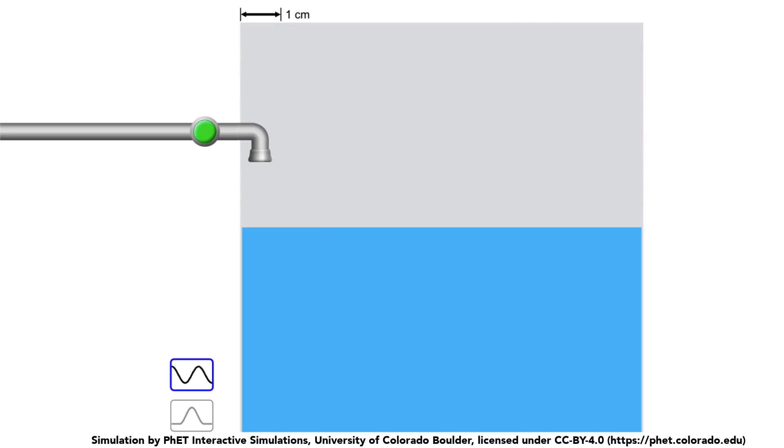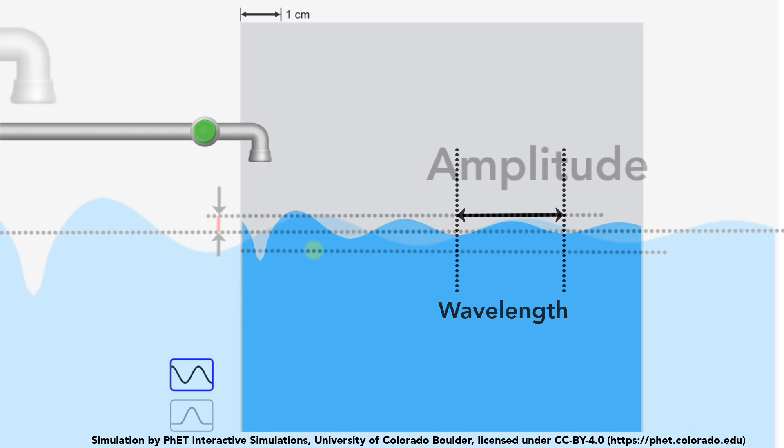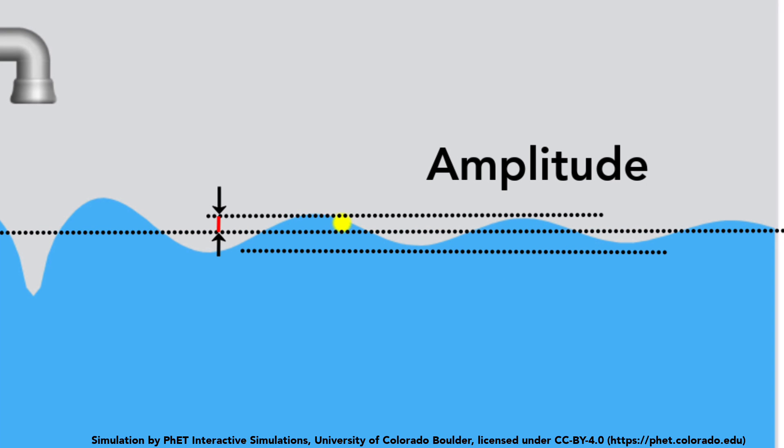And the same thing looking from the side looks somewhat like this. And we've talked about various features of waves, like the speed at which the wave travels, the number of waves passing through a point is what we call the frequency. And the distance between consecutive peaks or consecutive valleys, crests and troughs, we call it the wavelength.